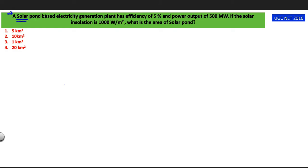So let's read the question. This question was asked in UGC NET 2016. A solar pond based electricity generation plant has efficiency of 5% and power output of 500 megawatt. If the solar insulation is 1000 watt per meter square, what is the area of solar pond?